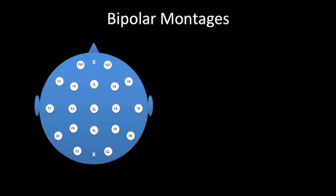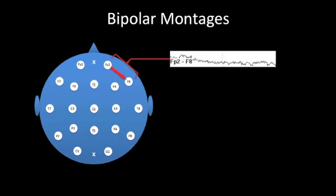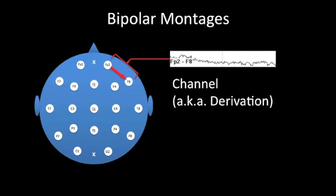The most commonly used montages in EEG interpretation are bipolar montages. A bipolar montage is based on the principle of comparing a single EEG electrode tracing to its adjacent neighbor. One of the commonest bipolar montages is the anterior-posterior bipolar montage. Going through this systematically, we may start by comparing FP2 to F8, which will generate a tracing, which we call a channel or derivation.